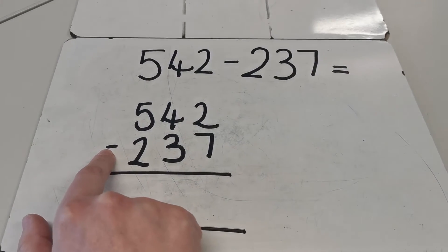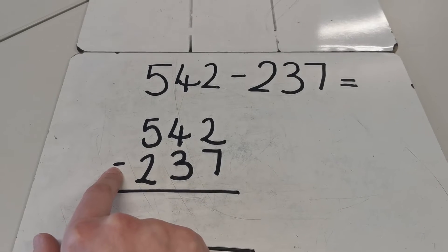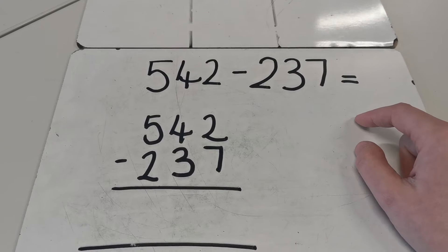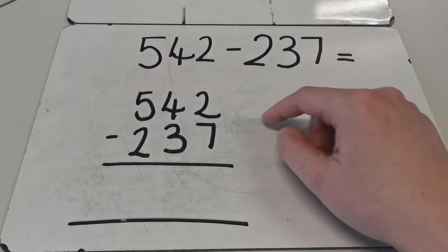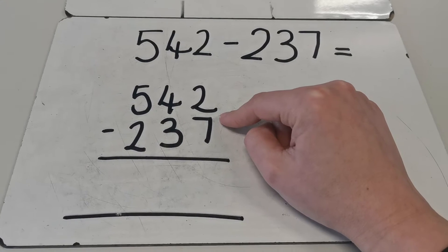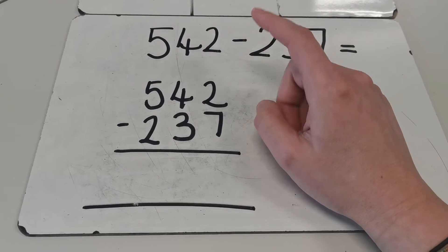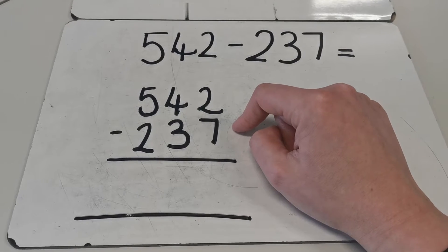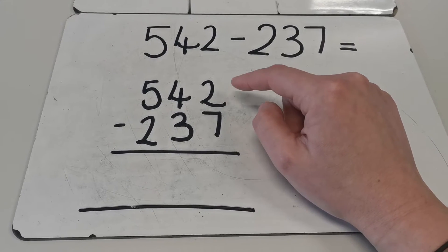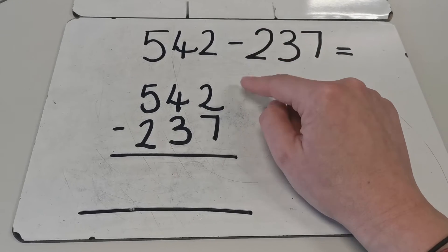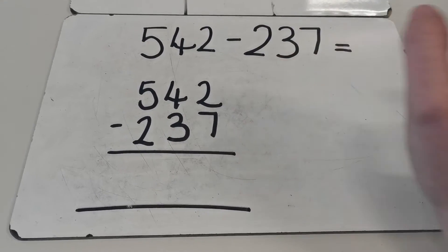You also need to make sure that you put the subtraction symbol over here to say that you are subtracting and not adding. I forgot to say in the last video: when you're looking at the ones column and you don't have enough ones to subtract, please do not switch those two numbers around so you can subtract them. Don't do seven subtract two because you will then change the question.